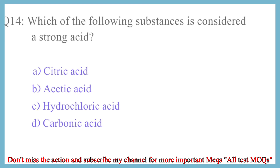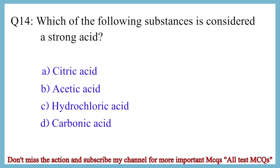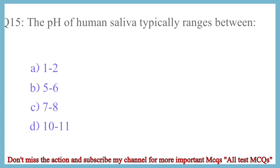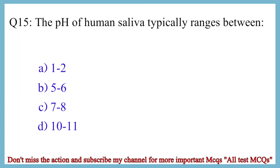Question No. 14. Which of the following substances is considered a strong acid? The correct answer is option C: Hydrochloric acid.